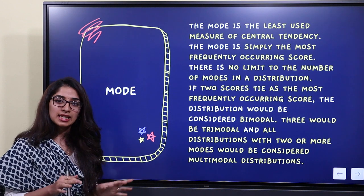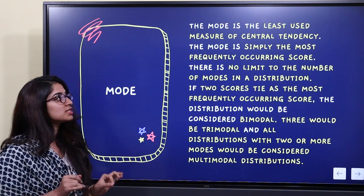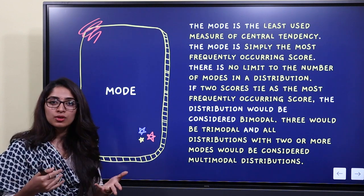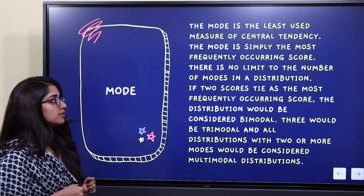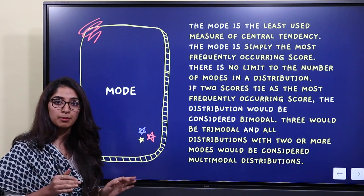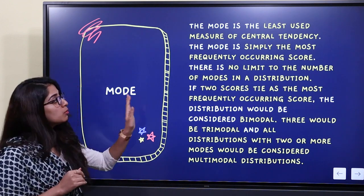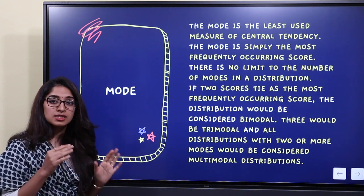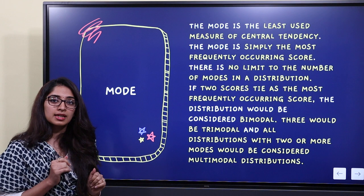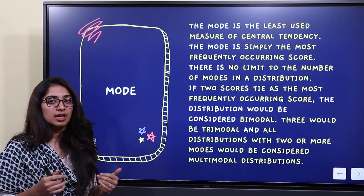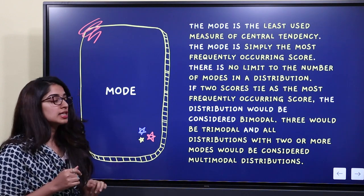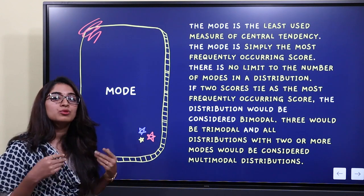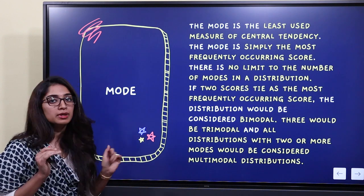Mode is another measure of central tendency, and it is the least used. Mode is the most frequently occurring number in a distribution. In a distribution, there can be more than one mode. If two numbers each occur the same number of times, there are two modes — that is called bimodal.